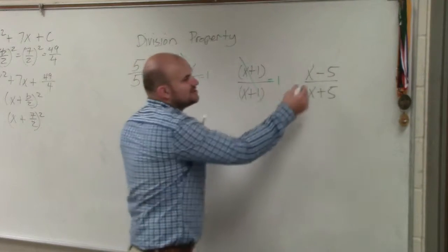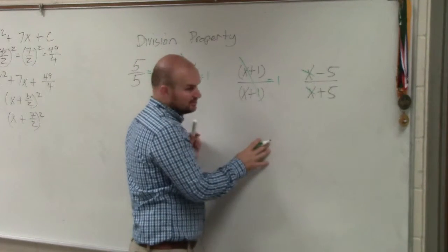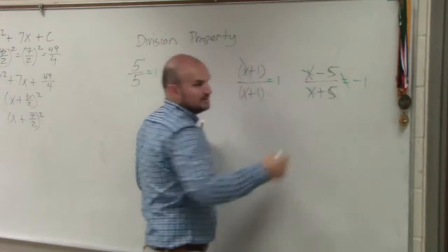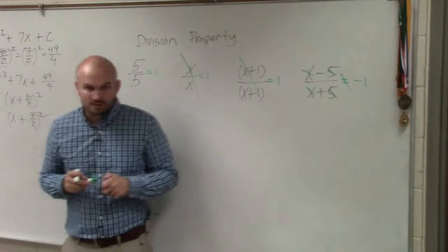You can't say I'm just going to divide out the x's. You can't do that. You can't say I'm going to divide out the 5's and make it equal to negative 1. That does not work.